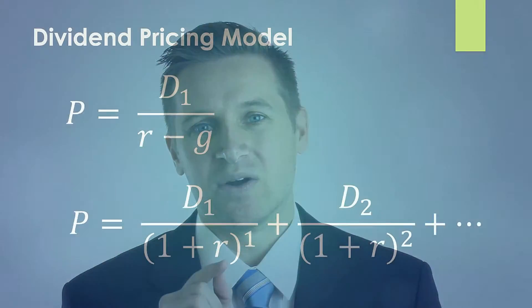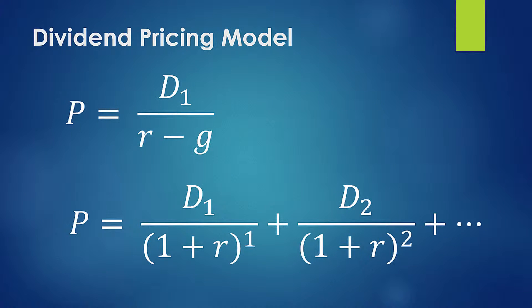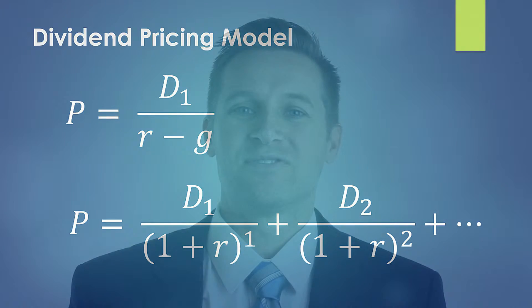The dividend pricing model is just a simplification of that. The equation — dividend divided by (risk minus growth) — is equivalent to doing that whole long mathematical process out forever into the future. There's a mathematical proof of this that goes from one equation to the other, which you can find in pretty much every finance textbook.